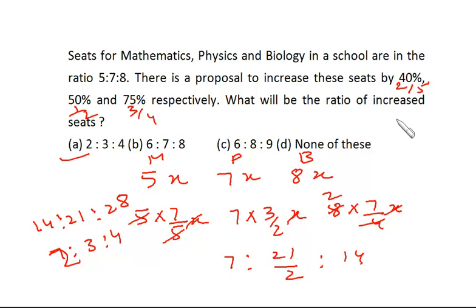Friends, you must remember the basic percentage to fraction conversions so that the problem becomes very easy. You must be knowing that 40% is actually 2/5, 50% is half, and 75% is 3/4. Since there is an increment, I am adding 1 plus 2/5, 1 plus 1/2, and 1 plus 3/4, and the same data as I have mentioned over here. I hope you are clear.